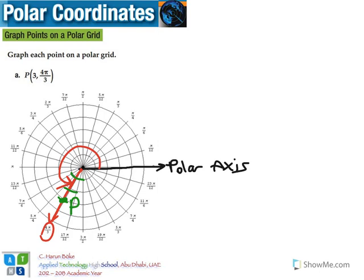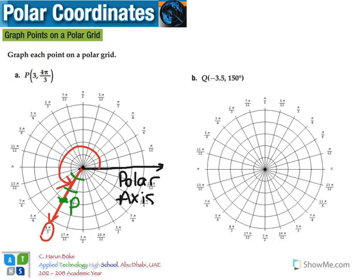Now, let's see another example. In this one, we have this point Q with (-3.5, 250°). Well, actually, you may have the polar grids given in degrees and in radians. Now, you can go through 150 degrees, which is actually 5π/6.